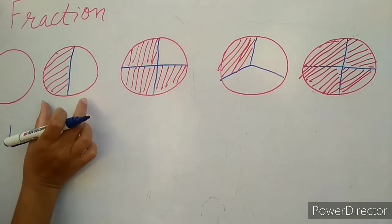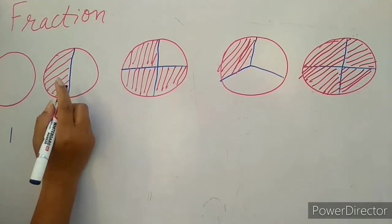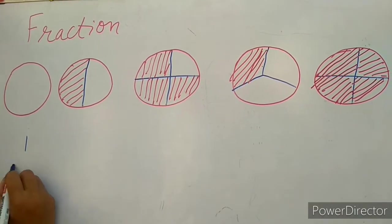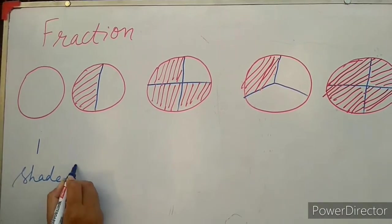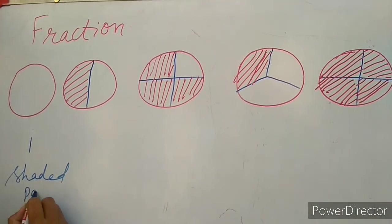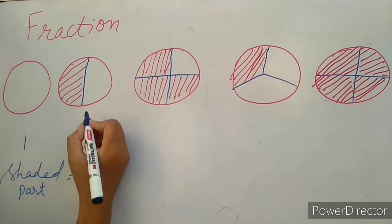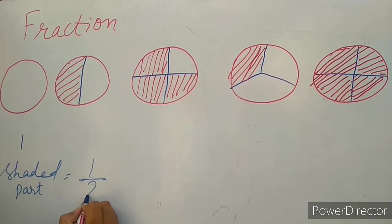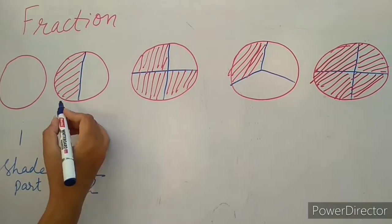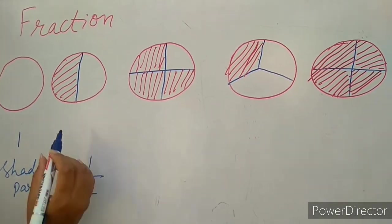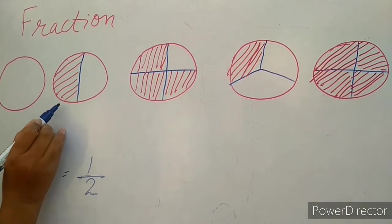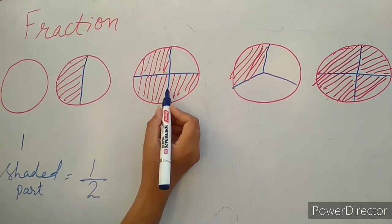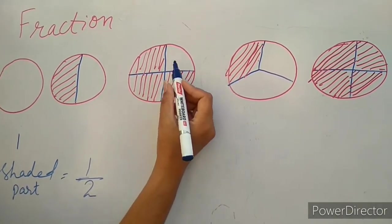In the second circle, I divide the circle into two parts. One part is shaded and the other is plain. We write the shaded part as one over two — the circle is divided into two parts and one part is shaded, so one over two is a fraction.